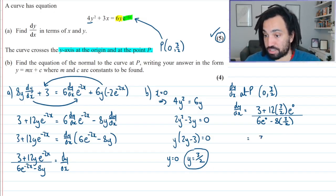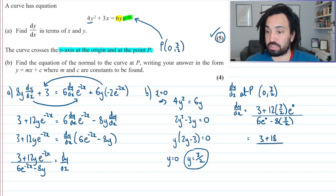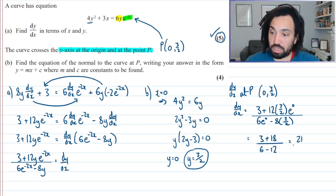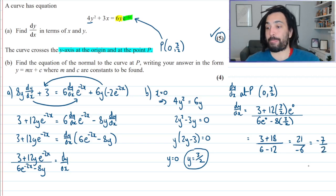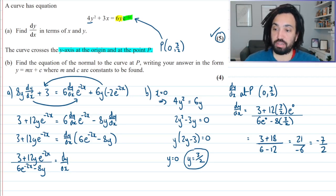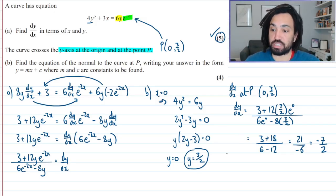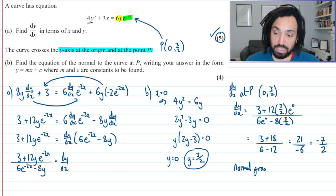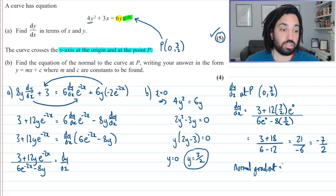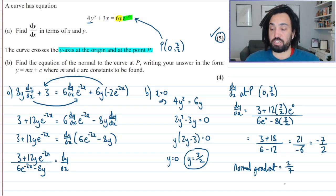That looks good to me. OK, let's do some simplifying. So that's 3 plus 18 over 6 minus 12, which is 21 over negative 6. So that is minus 7 over 2. And it says find the equation of the normal. So the normal gradient, because what we've just worked out is the gradient at the point P. So that's always the gradient of the tangent. So the gradient of the normal is the negative reciprocal, which means we flip and we change the sign. So it's 2 over 7.